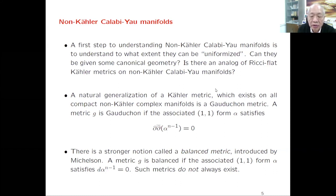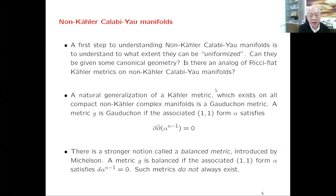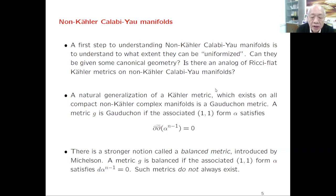Natural generalizations of Kähler metrics were studied by many people. One important class of non-Kähler metrics is now called SKT metric. A Hermitian metric is called SKT if the associated (1,1)-form alpha satisfies the condition that alpha to the power of n minus one is closed under the d-d-bar operator. This is one single equation because it is top-dimensional—alpha to the power n minus one and you take d-d-bar gives a top (n,n)-form.